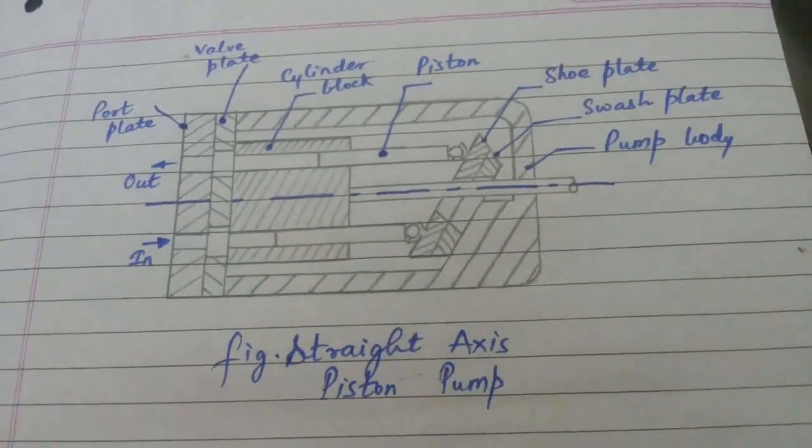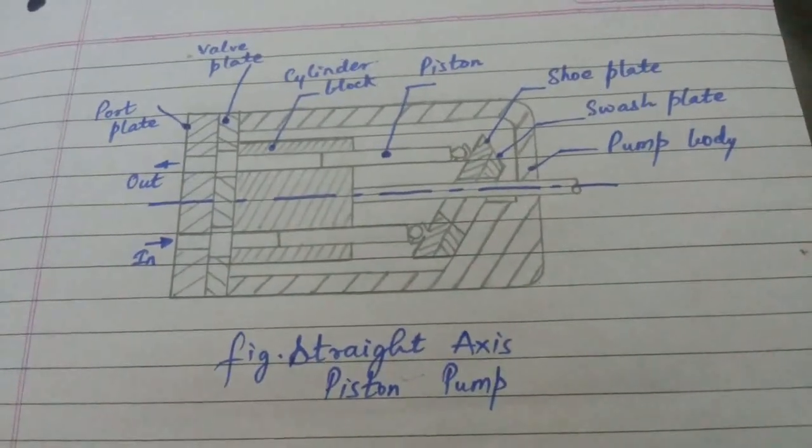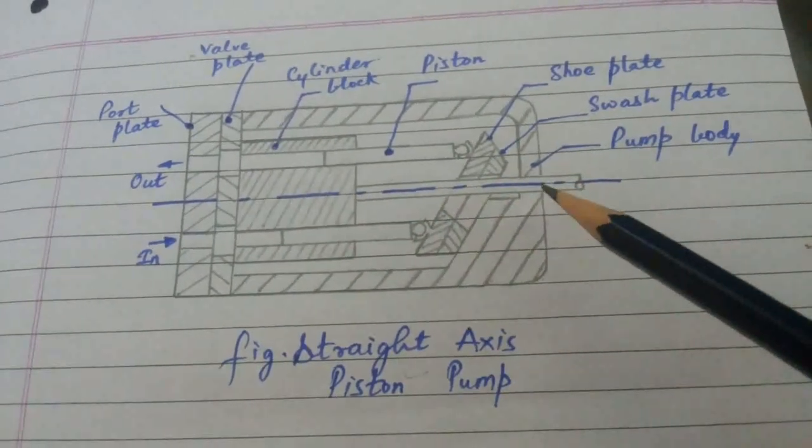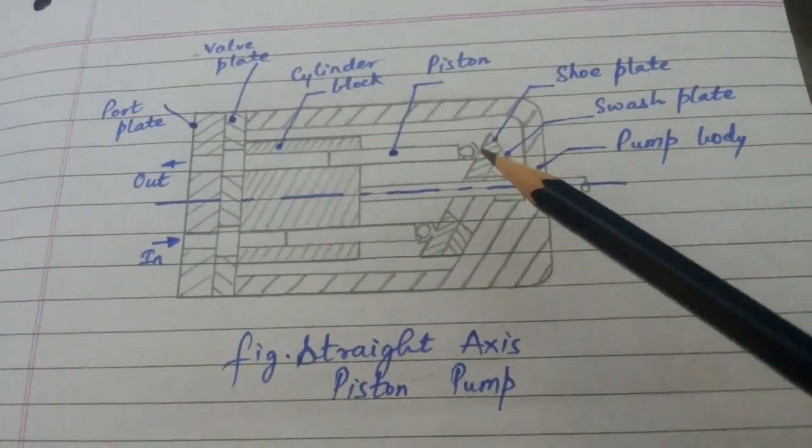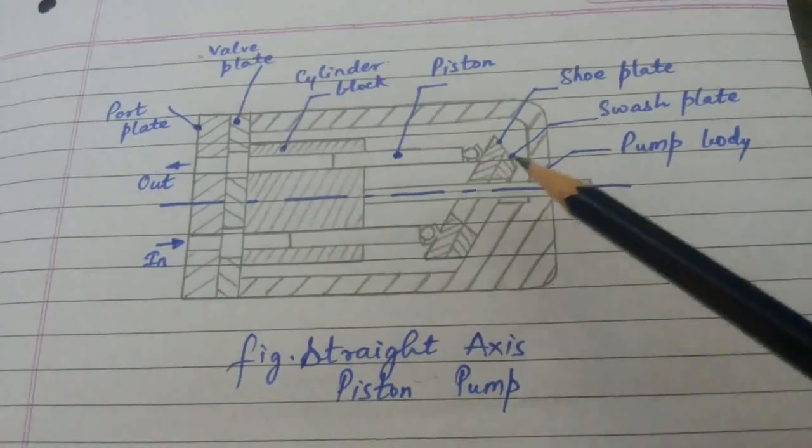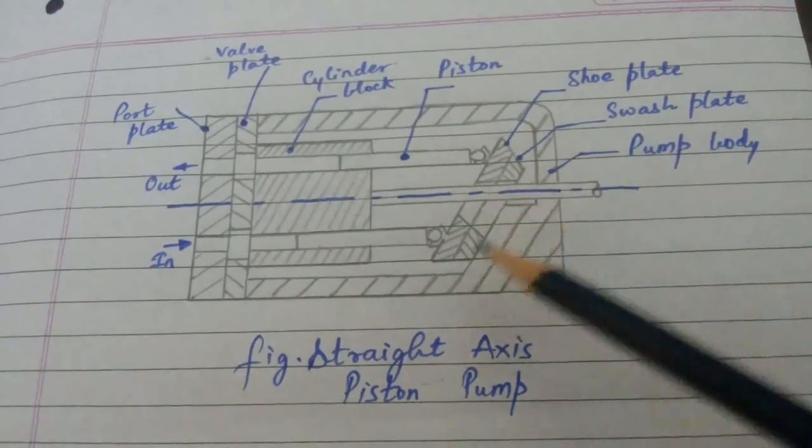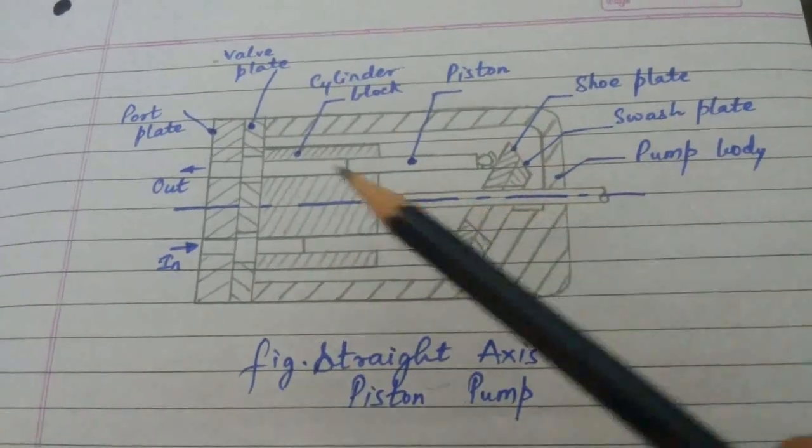So in the straight axis piston pump, the cylindrical block is fitted with the drive shaft. The shoe plate is mounted on the squash plate which is fixed at an angle to the axis of rotation.